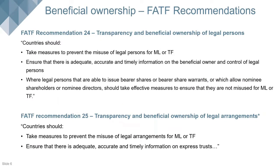FATF Recommendation 24 deals with transparency and beneficial ownership of legal persons. It states that countries should take measures to prevent the misuse of legal persons for money laundering or terrorist financing, and ensure there is adequate, accurate and timely information on the beneficial owner and control of legal persons. Where legal persons are able to issue bearer shares or allow nominee shareholders or directors, effective measures should be taken to ensure they are not misused for money laundering or terrorist financing.